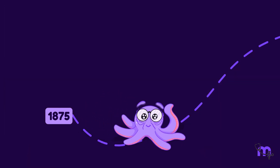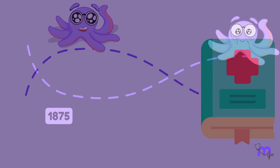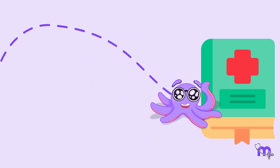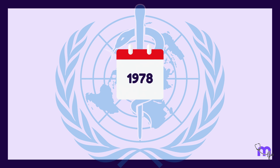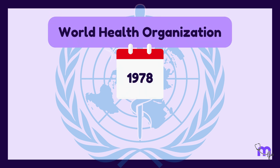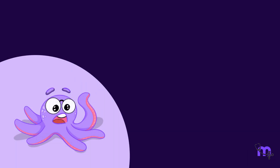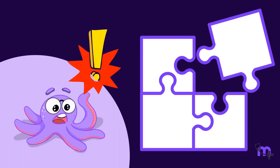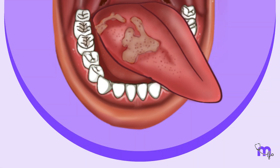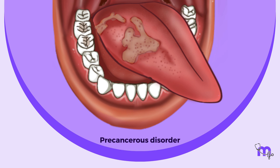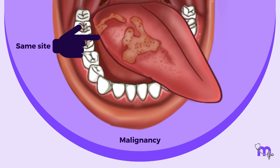As time passed, the 20th century welcomed a new era of medical terminologies. In 1978, the World Health Organization recognized the need for a more precise term and introduced precancerous or pre-malignant lesions. However, a new challenge arose. In those days, it was thought that malignancy from any precancerous disorder would appear at the same site as the precancerous state.